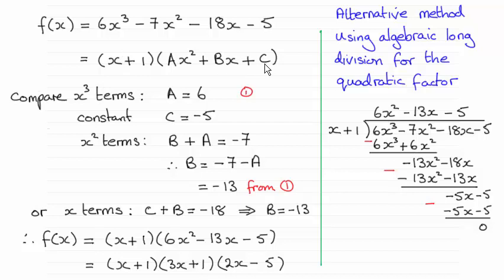So what I've done is set up my quadratic factor here, ax² + bx + c, and then comparing the x³ terms, a must be 6 here. When you multiply x with the ax² term, you've got to get 6x³, so a clearly has to be 6.